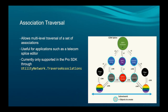We also have association traversal, a fairly new thing that is really only useful if you're building a telecom application. The idea is to allow a multi-level traversal of a whole set of associations in one call to the service — for example, a splice enclosure with different trays, connector groups, splice points, and fibers. This is called traverse associations and is available in the Pro SDK or via REST, eventually coming to other platforms as well.